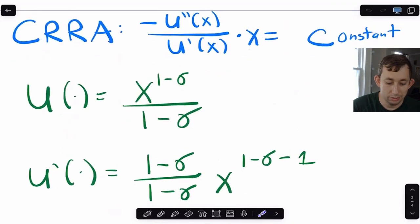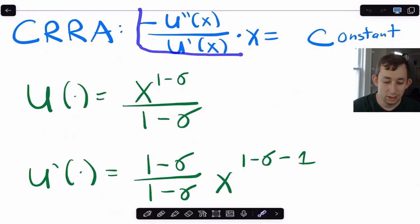Remember that constant relative risk aversion just means that if I take my Pratt-Era measure of risk aversion, which is the ratio of the second derivative to the first derivative, and I multiply it by x, I should get a constant.